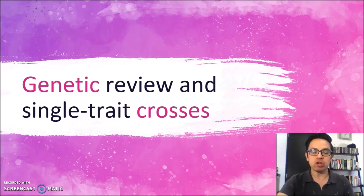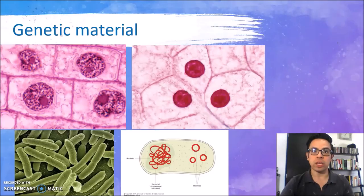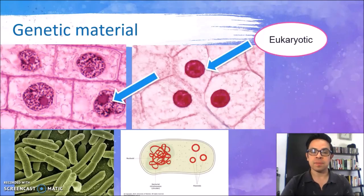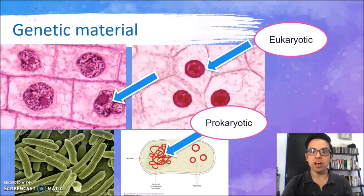Every living creature on Earth has the genetic information of life contained inside the DNA. If this DNA is held within a nucleus, then we call it eukaryotic cells. If this DNA is just floating around the cytoplasm, then we call it prokaryotic cells. But remember that whether it is animal, plant, or bacterial cells, all of these have genetic material known as DNA.